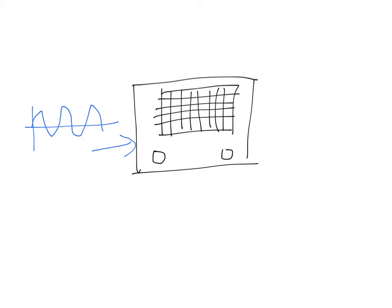You have two things that you can control. The horizontal axis is controlled by a setting called the time base, and the vertical axis is controlled by a setting called the Y output. How you control your Y output and your time base depends on the scale that you set. But before we talk about scales, let's talk about what happens when you turn the time base or Y output on and off.